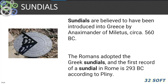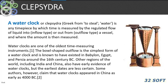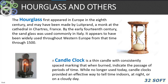Humanity has used several different methods and contraptions for telling time throughout history. Sundials are probably one of the first methods of measuring time — simply a device that indicates time by using a shadow cast by the position of the sun on a reference scale. A clepsydra, or water clock, is one of the older time measuring instruments, invented around the 16th century BC, measuring time by the regulated flow of liquid into or out of a vessel. The hourglass first appeared in Europe around the 18th century, and by the early 14th century, sand in glass was commonly used in Italy and throughout Europe.